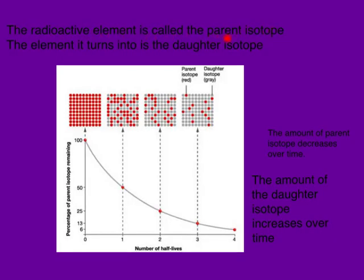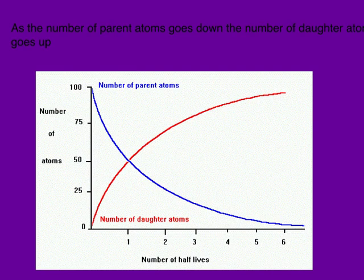The radioactive element is called the parent isotope, and the element it turns into is called the daughter isotope. Here we can see that as the amount of parent isotope in red goes down with each half-life, the amount of daughter isotope, which is in gray, goes up. The curve for radioactive decay shows that here we had 100% radioactive; after one half-life, 50% is radioactive; after two half-lives, only 25% is radioactive, and so on. This graph shows us both curves — the number of parent atoms going down and the number of daughter atoms going up at the same time.